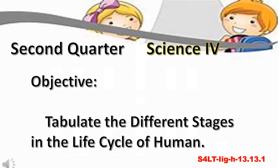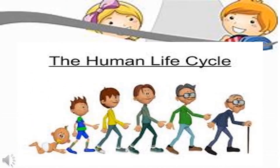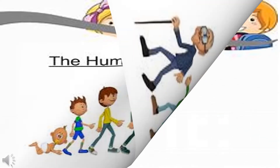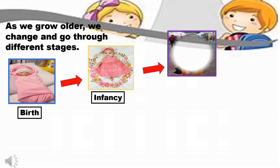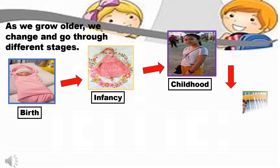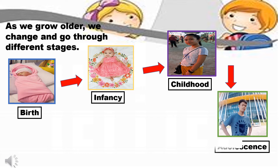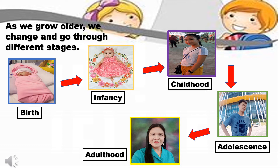For today's objective, tabulate the different stages in the life cycle of humanity. Look at the picture — this is the human life cycle. As we grow older, we change and go through different stages, and we have five different stages.